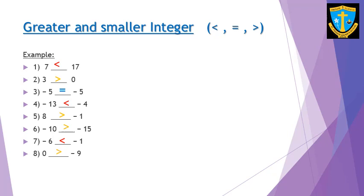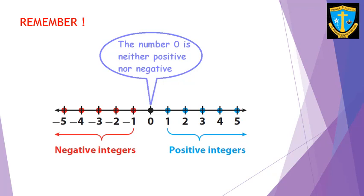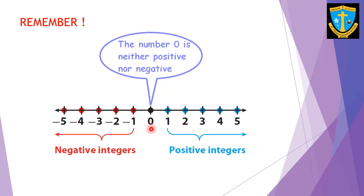A thing to remember: zero is the middlemost integer. On the right-hand side we have positive integers, and on the left-hand side of zero we have negative integers. Zero is neither positive nor negative — it does not carry any sign. Numbers without a sign shown are still called positive numbers.